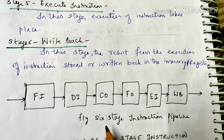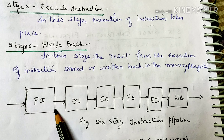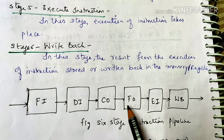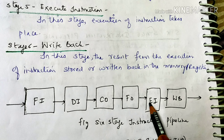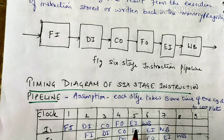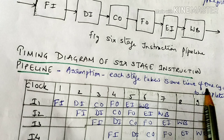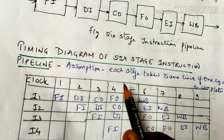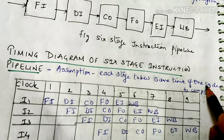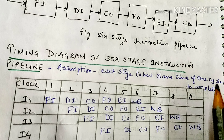This is the 6-stage instruction pipeline: fetch instruction, decode instruction, calculate operand, fetch operand, execute instruction, and write back. Next, we have to make a timing diagram. We assume that each stage takes the same time of one clock cycle to complete.